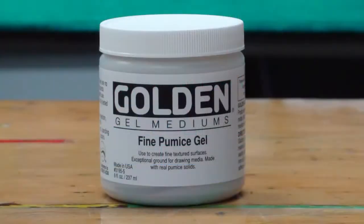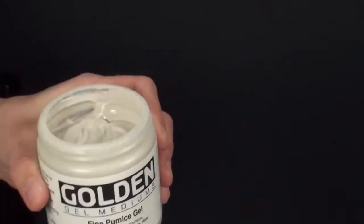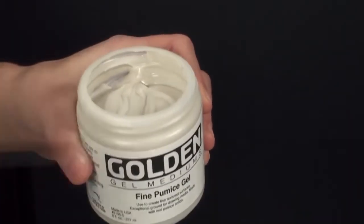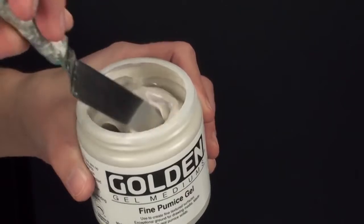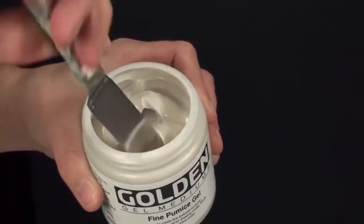Golden Artist Colors Fine Pumice Gel is a suspension of finely ground pumice in a clear 100% acrylic gel. The consistency of Fine Pumice Gel out of the jar is similar to our regular gel or heavy body paint.